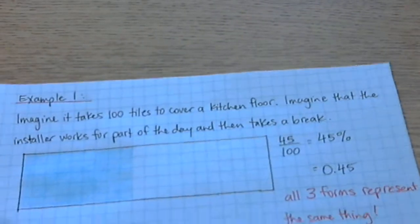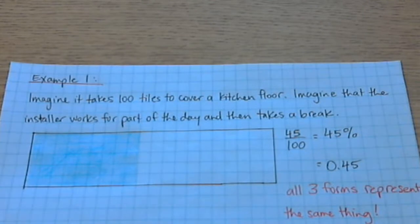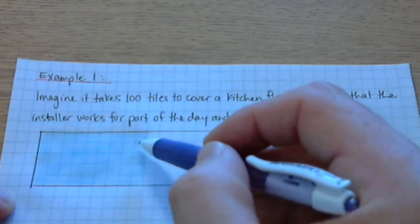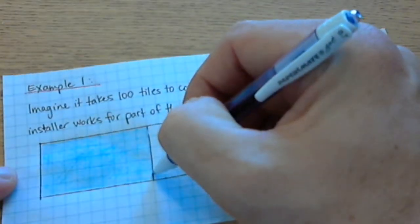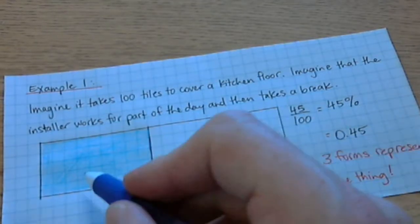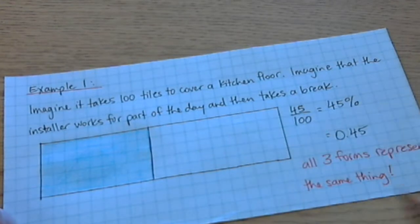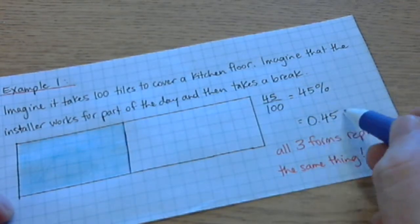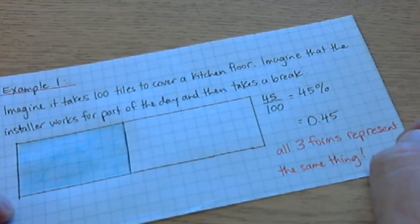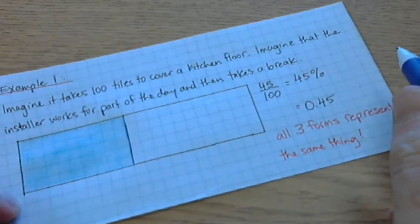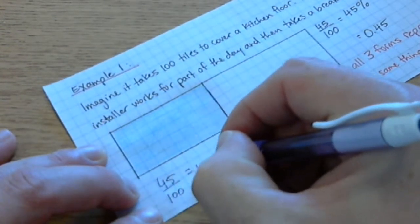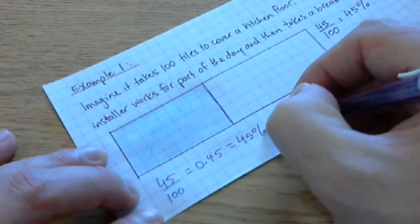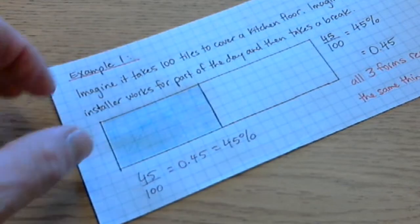Moving on through a couple of examples. This is a different square, but imagine that it takes a hundred tiles to cover a kitchen floor, and the installer works for part of the day and then takes a break. I have a hundred squares — five by twenty is a hundred — and forty-five of them are blue; forty-five tiles have been installed. So forty-five out of the hundred have been installed. Notice that's forty-five per one hundred, it's forty-five percent. Also notice I can write it as 0.45. All three forms represent the same thing, so there's a relationship between fraction form, decimal form, and percent form. They all relate — they all represent the same thing. That's key to remember.